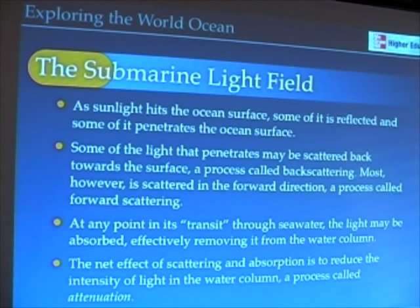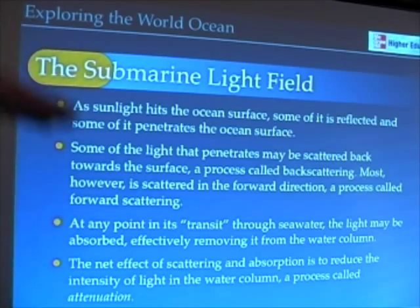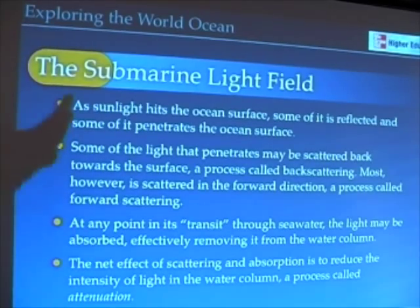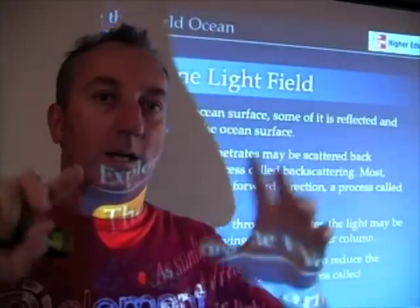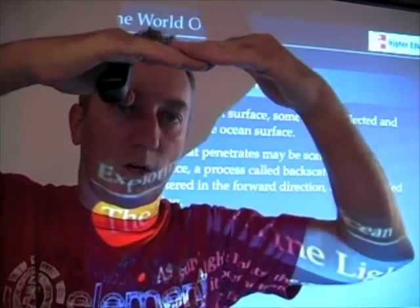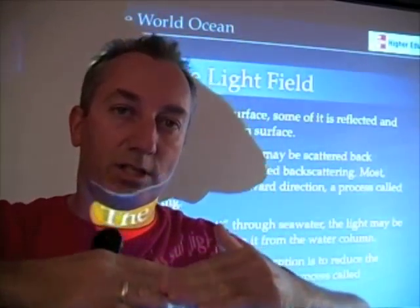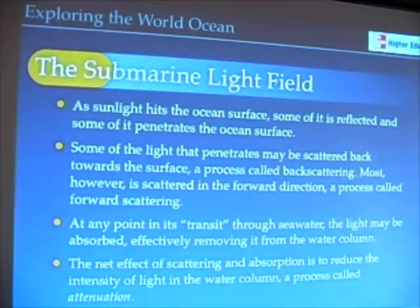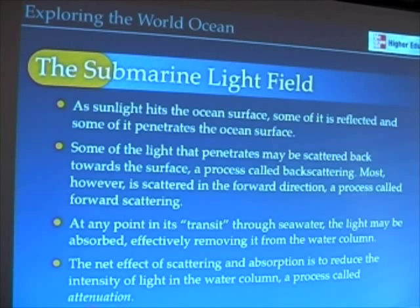At any point, as light is traveling from the surface to depth, that light may be removed. As it is scattered away from the downward path — scattered anywhere other than deeper — that causes the light intensity to decrease. That decrease in light intensity is called attenuation. The word 'attenuate' simply means to reduce something.